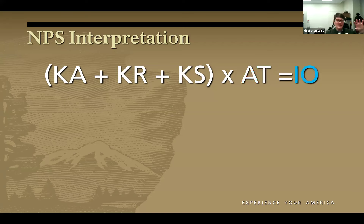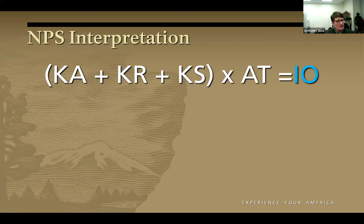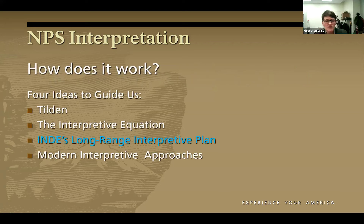You take all of those disparate things and mash them together, and what you get is IO — interpretive opportunity. That's the end game: the chance for people to connect with the subject matter, with an idea you presented to them, something they can walk away from and say, 'I didn't know that,' or 'I never looked at it that way.' They can then use that connection to provoke them to action — the conservation and preservation of these places. So we've done Tilden, we've done the interpretive equation. Now let's talk about specific things for Independence: the long-range interpretive plan.